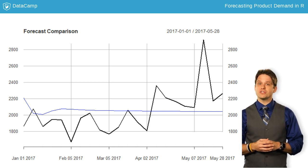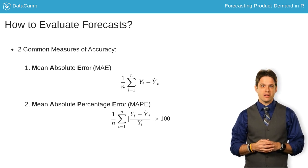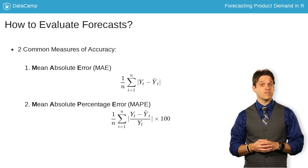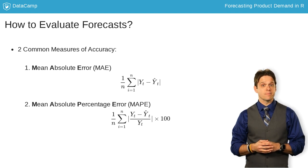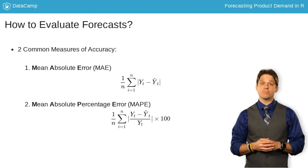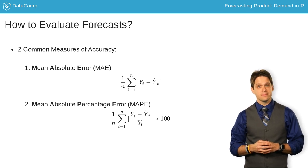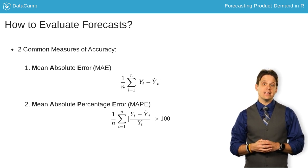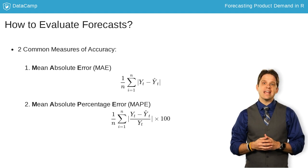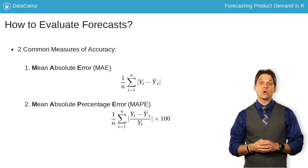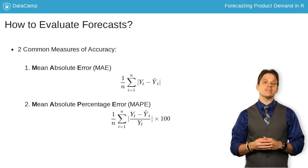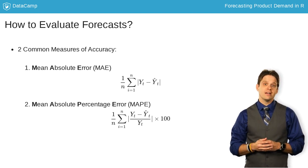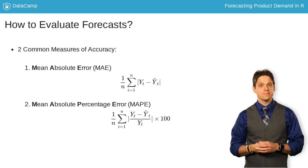There are many ways of measuring accuracy in time series models. Two of the most common ways of doing so are the mean absolute error, called the MAE, and the mean absolute percentage error, called the MAPE. The MAE is the average measure of how far away, in absolute terms, your prediction is from the actual value. The best part of the MAE is that it is easily measured in the scale of your data. However, that is also the downside. How so?